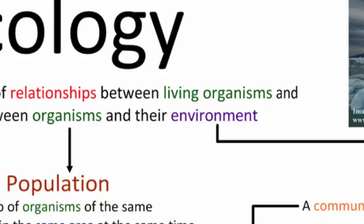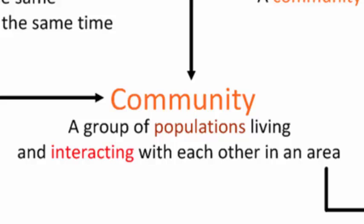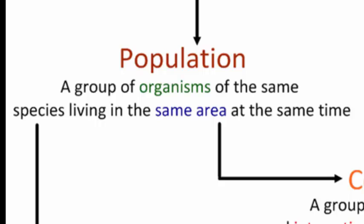You start with an ecosystem. An ecosystem is a community and its abiotic or non-living environment. What's a community? A community is a group of populations that's living and interacting with each other in an area. That area would be the habitat of each species. A population is a group of organisms of the same species living in the same area at the same time.